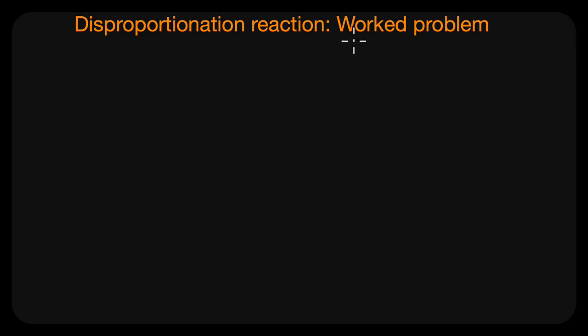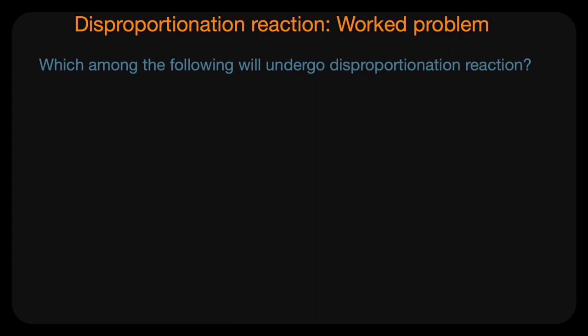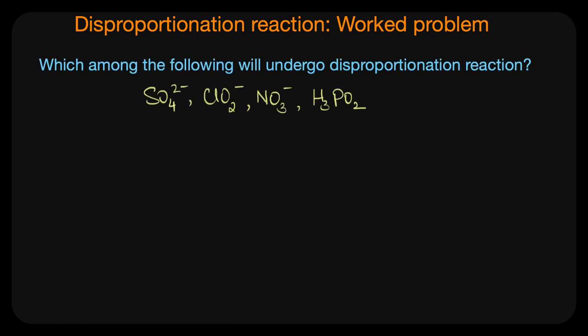In this video we are going to discuss a few problems based on a special type of redox reaction known as the disproportionation reaction. The first question asks: which among the following will undergo a disproportionation reaction? The species given are SO4²⁻, ClO2⁻, NO3⁻, and H3PO2. To solve this, we need to look at the oxidation state of the central element in each species.